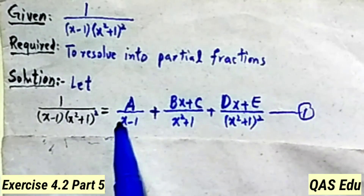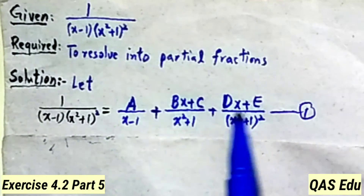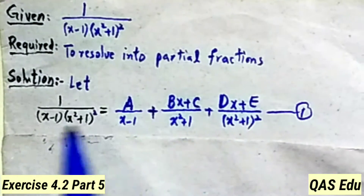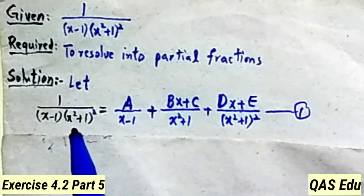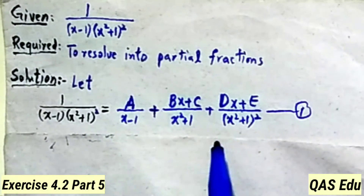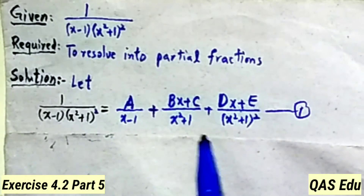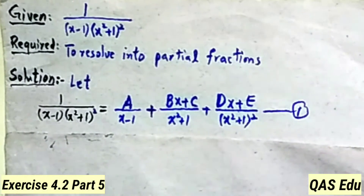The equation has constants a, b, c, d, and e. The given fraction is expressed as the sum of these partial fractions, giving us equation number 1 as the result.